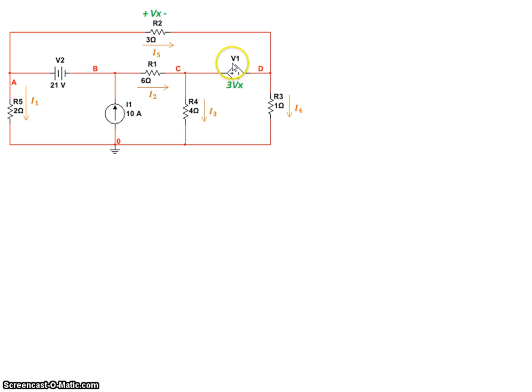Similarly, voltage V1 can be written as VC minus VD. So at V2, we have 21, and at V1, we have VC minus VD equals 3VX. And VX is, in turn, VA minus VD. So if we take this equation right here and group all A, B, C, and D voltages on the left-hand side, we get 3VA minus VC minus 2VD is equal to 0.